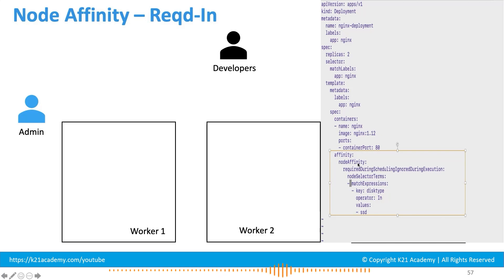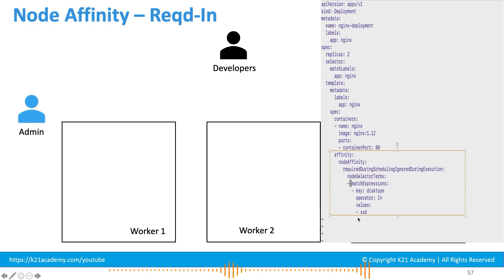Inside the spec section, containers is one section and affinity is another. Inside affinity you have node affinity, and within node affinity you can have a required condition or a preferred condition. The required condition is a mandate to be met, but only during scheduling. If your pod is up and running and the admin changes labels on the fly, your already running pods will not be affected. The condition need only be met during scheduling; during execution it can be ignored.